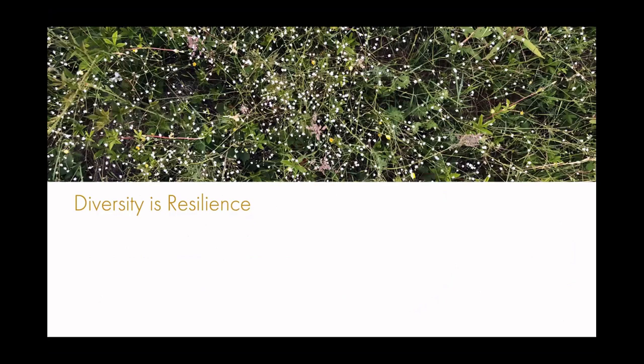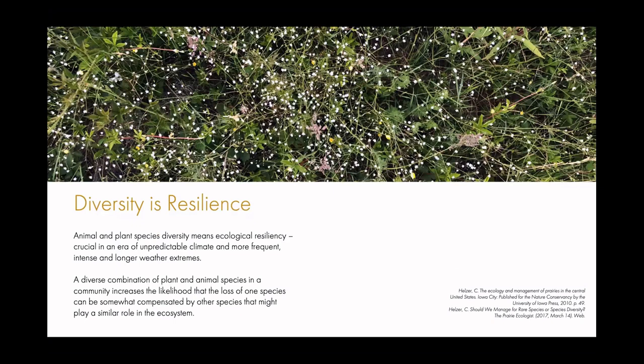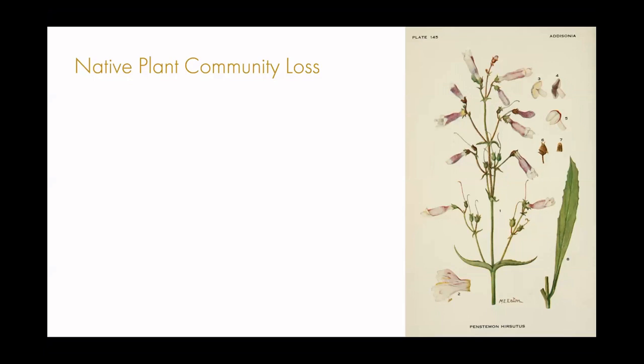We've really got to help them. Diversity in a landscape is resilience — animal and plant species diversity means ecological resiliency, and this is what we need because our climate is changing and we don't know what's going to happen or how long it will last. We need to think about a diverse combination of plant and animal species on the landscape, not just one thing. That's why monoculture sites such as farms don't work, and that's why pollinator plantings that keep using the same common 30 species — like purple coneflower, which isn't even native to Massachusetts — don't work. They're not resilient, not diverse, and they don't support pollinators.